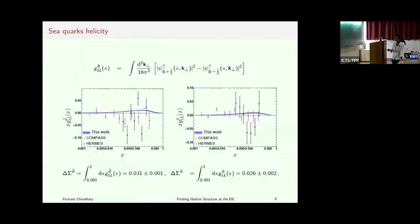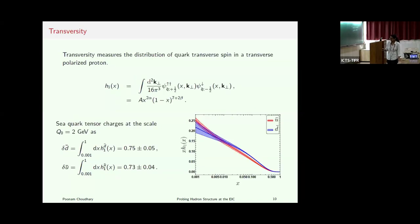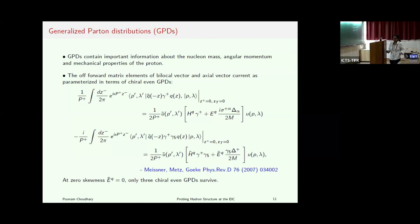Next is helicity. We can also predict the helicity since we have the model parameters and light-front wave functions. The left results are for D-bar helicity with comparison to HERMES and COMPASS, and these are for U-bar. The longitudinal spin contribution from D-bar is around 3%, and around 2.6% for U-bar. We also obtained results for transversity, which measures the distribution of quarks with transverse spin in a transversely polarized proton, and these are the corresponding distributions and axial charges for U-bar and D-bar.